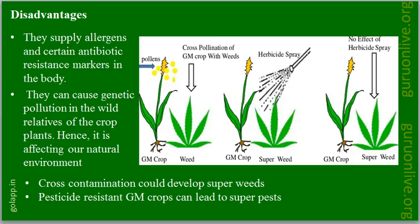Now coming to disadvantages. GM crops supply allergens and certain antibiotic resistance markers in the body. They can cause genetic pollution in the wild relatives of crop plants, hence affecting our natural environment. Cross contamination could also develop super weeds.